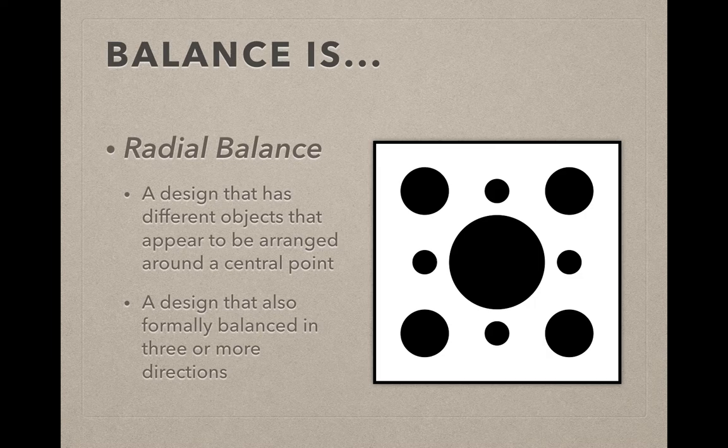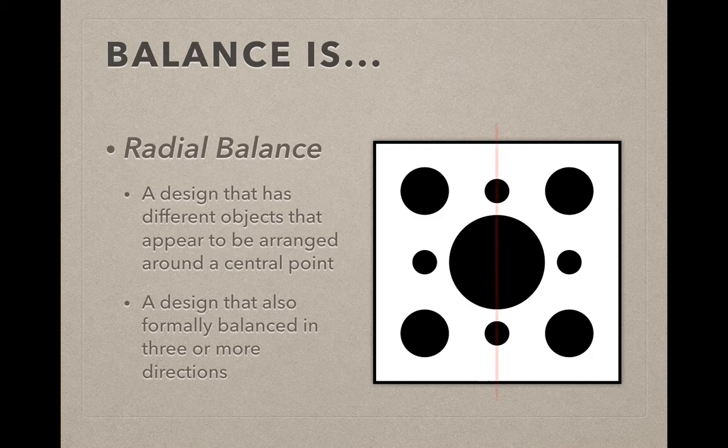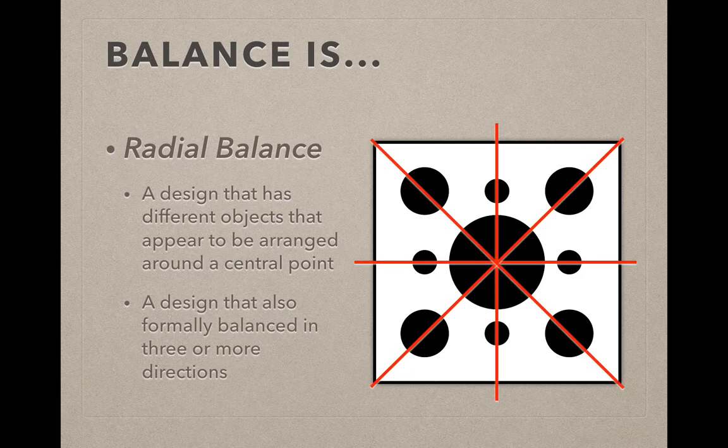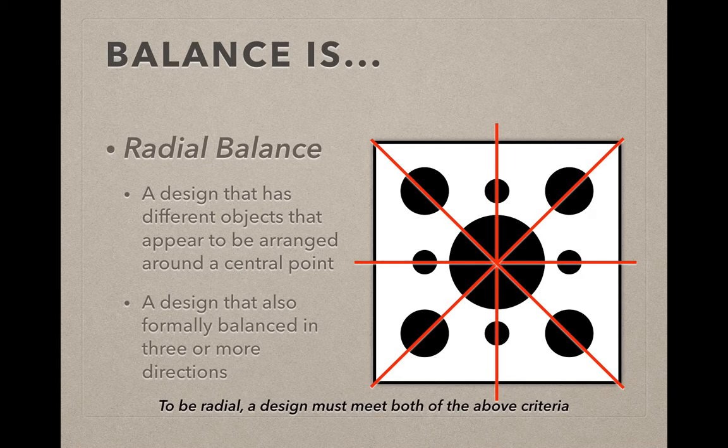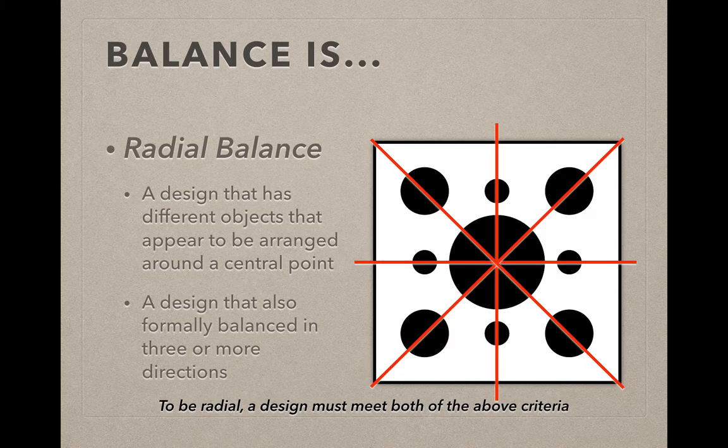So in this example, you see a group of circles that are arranged around the center of the big circle in the center. And if I draw vertical red lines and diagonal red lines, I can actually divide this space in four different directions and it's still formally balanced no matter which of those lines I fold the design on.